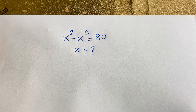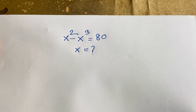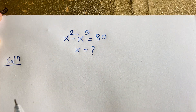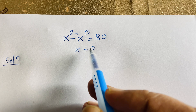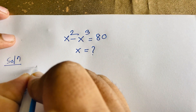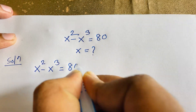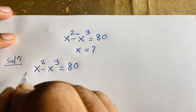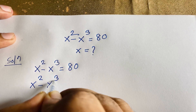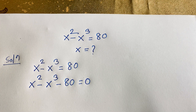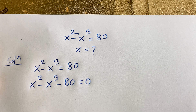Hello everyone. In this video we solve this interesting math question: x squared minus x cubed is equal to 80. How to solve this question? Let's start the solution. Our question is x squared minus x cubed equals 80, which becomes x squared minus x cubed minus 80 equals 0 after subtracting 80 from both sides.